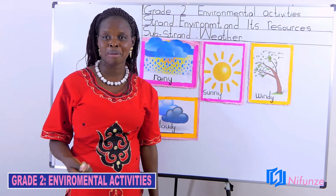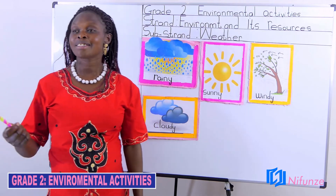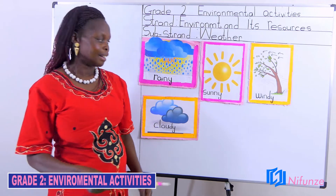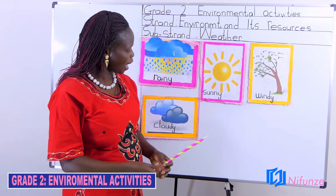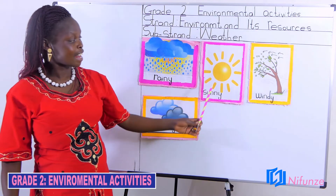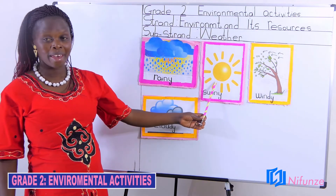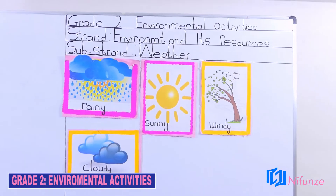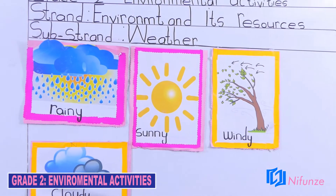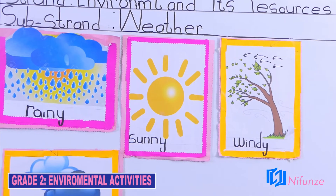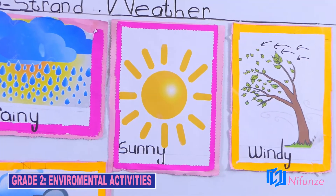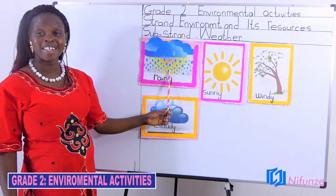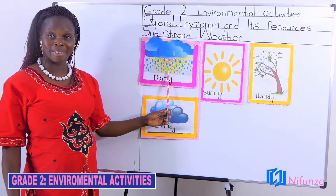Maybe you can talk about sunny. Here we have a sunny weather. Some other time you can see that the weather can be rainy. Here we have a rainy weather.